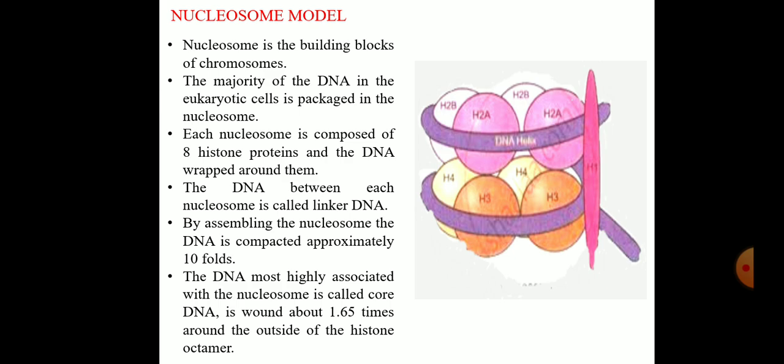Each nucleosome is composed of 8 histone proteins and the DNA is wrapped around them. The DNA between each nucleosome is called linker DNA. By assembling the nucleosome, the DNA is compacted approximately to 10 folds.